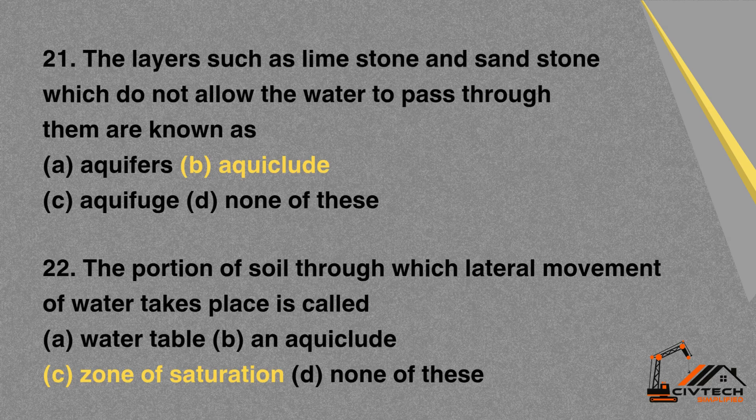MCQ 22: The portion of soil through which lateral movement of water takes place is called — A. Water table. B. An aquiclude. C. Zone of saturation. D. None of these. Correct option: C. Zone of saturation.